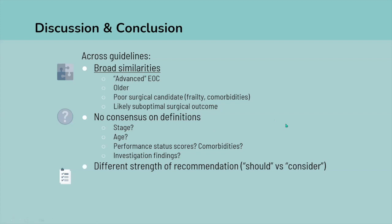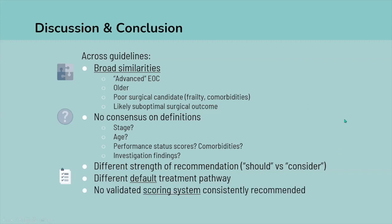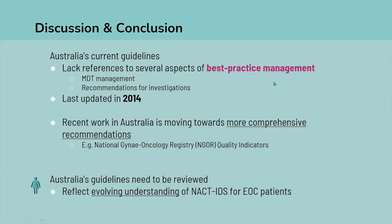Some guidelines say a group 'should' receive chemotherapy first, while others say to 'consider' it. There are also different default treatment pathways — American guidelines tend to default to surgery first and identify subgroups for chemotherapy first, while European guidelines define three groups: chemotherapy first, surgery first, and an in-between group. There is no validated scoring system consistently recommended. Australia's guidelines also lack references to MDT management and specific investigations, and were last updated in 2014.